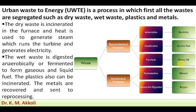The biochemical process involves biochemical reactions with two main methods: fermentation and anaerobic digestion. From fermentation, ethanol is obtained. From anaerobic digestion, biogas is obtained. This biogas is used for domestic cooking and water heating, while ethanol is used as a vehicle fuel.